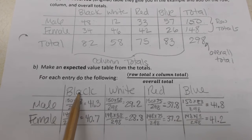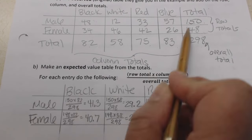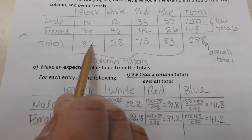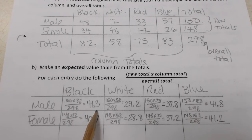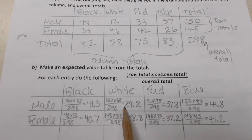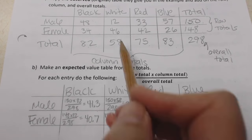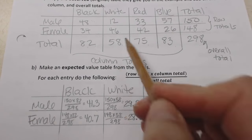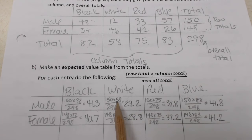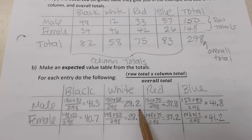For male who prefers black: 150 × 82 ÷ 298, rounded to three significant figures, is 41.3. For male who preferred a white shirt: 150 × 58 ÷ 298, correctly rounded to three significant figures, is 29.2.